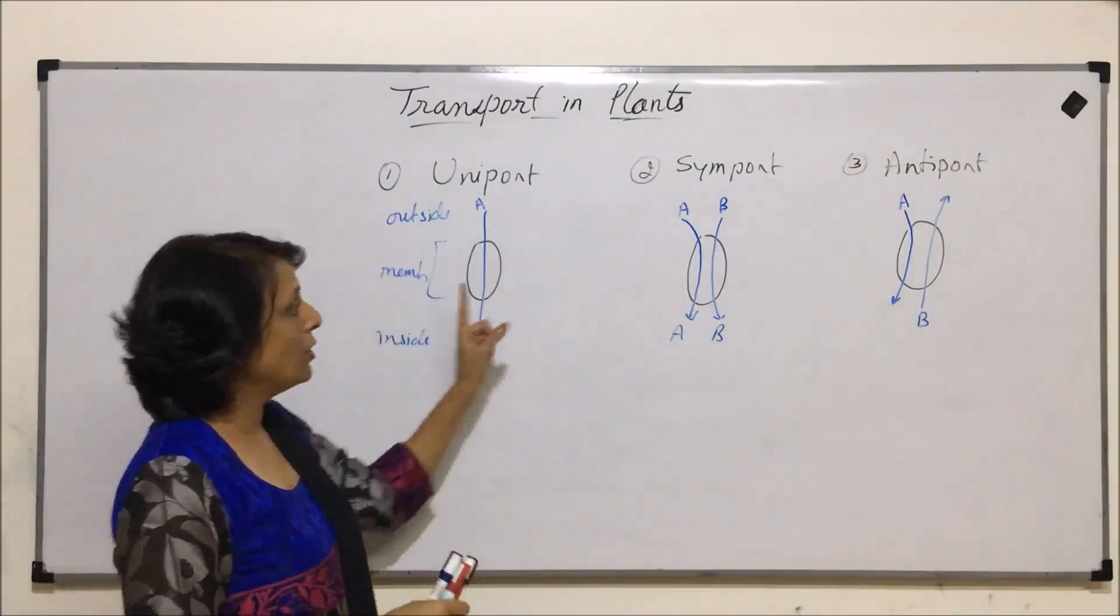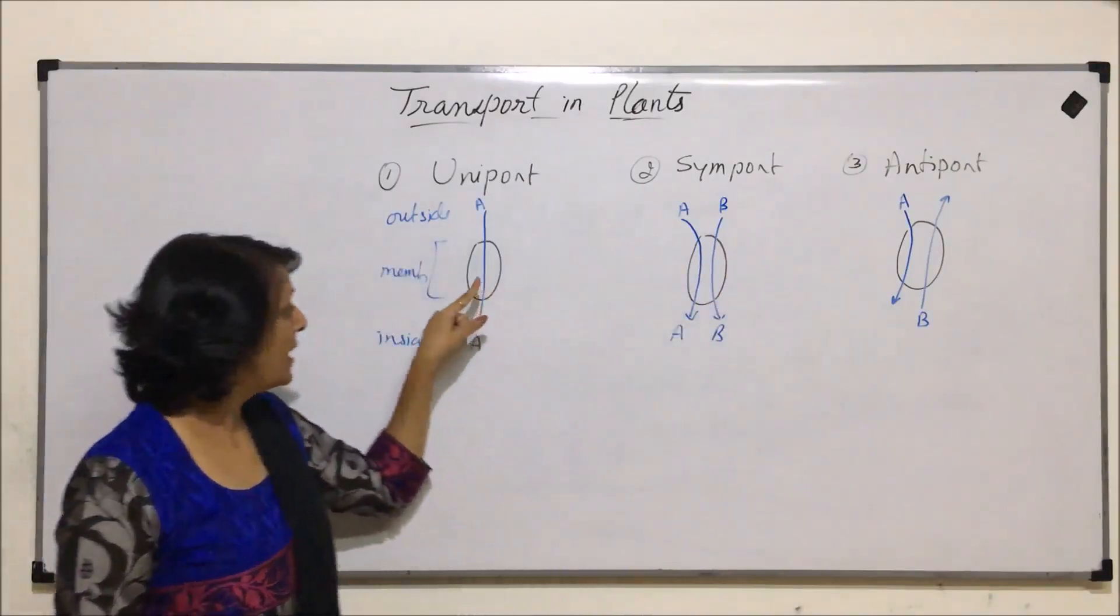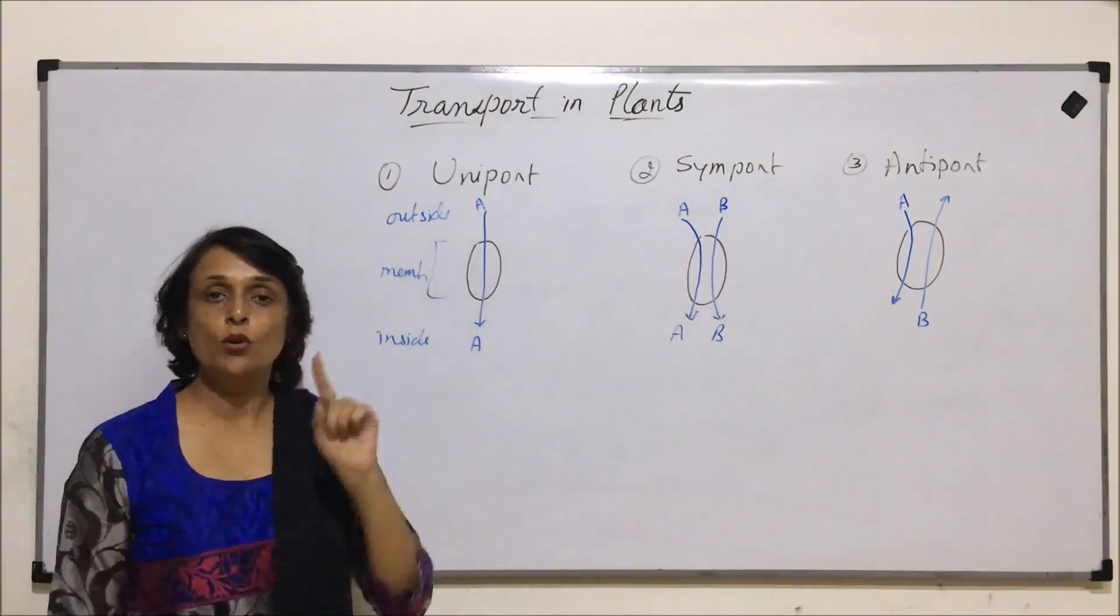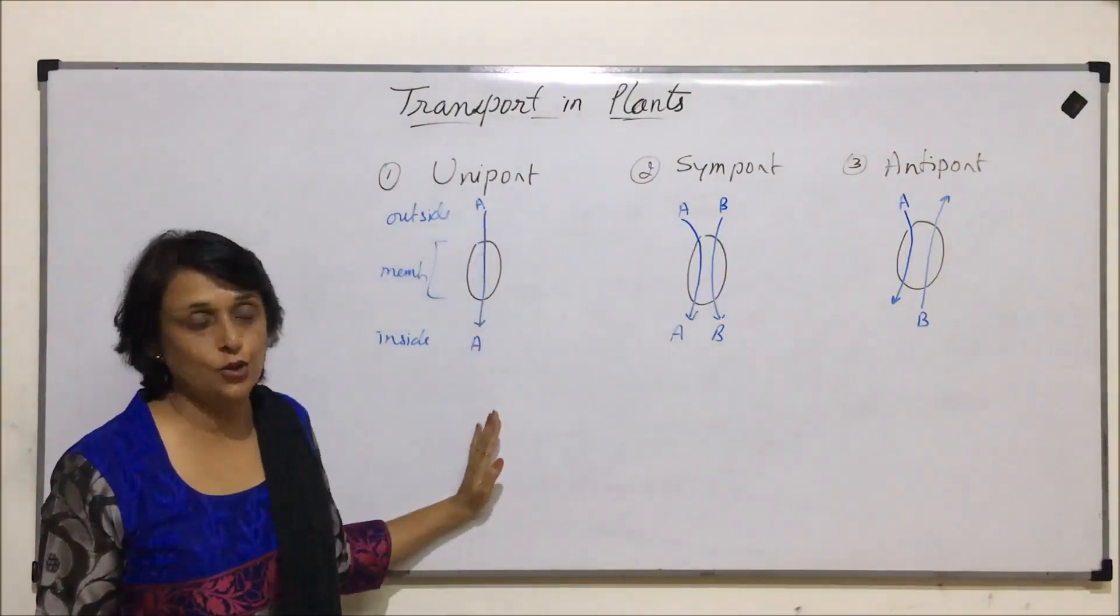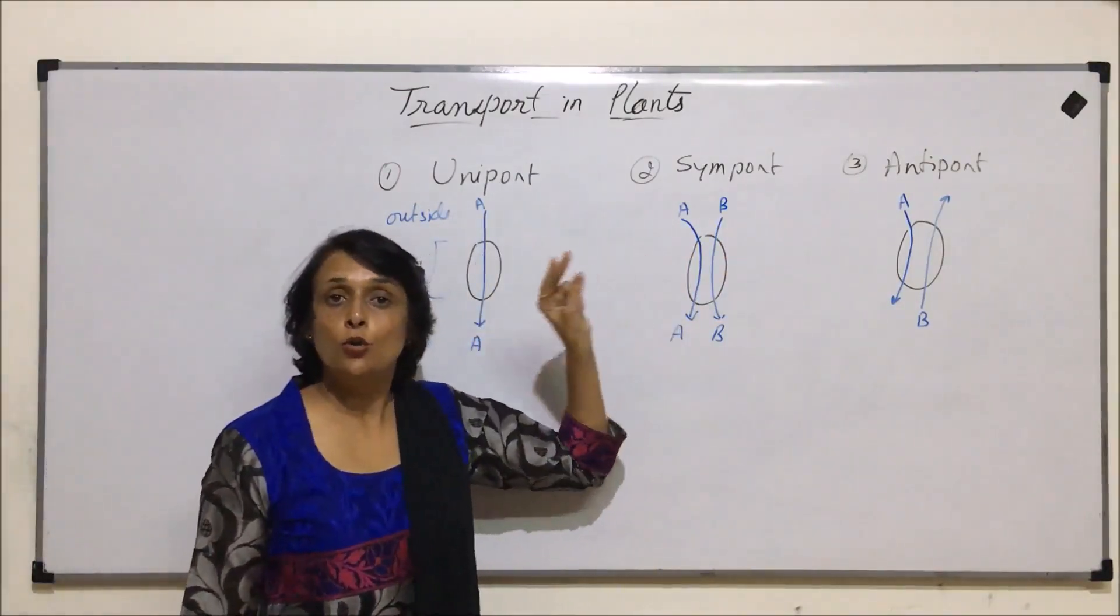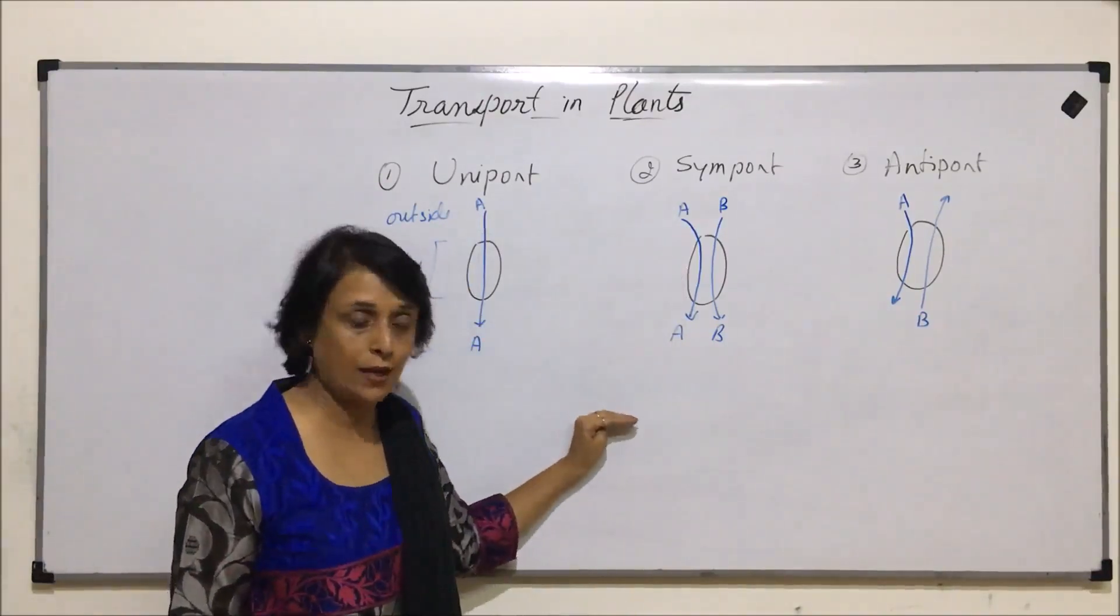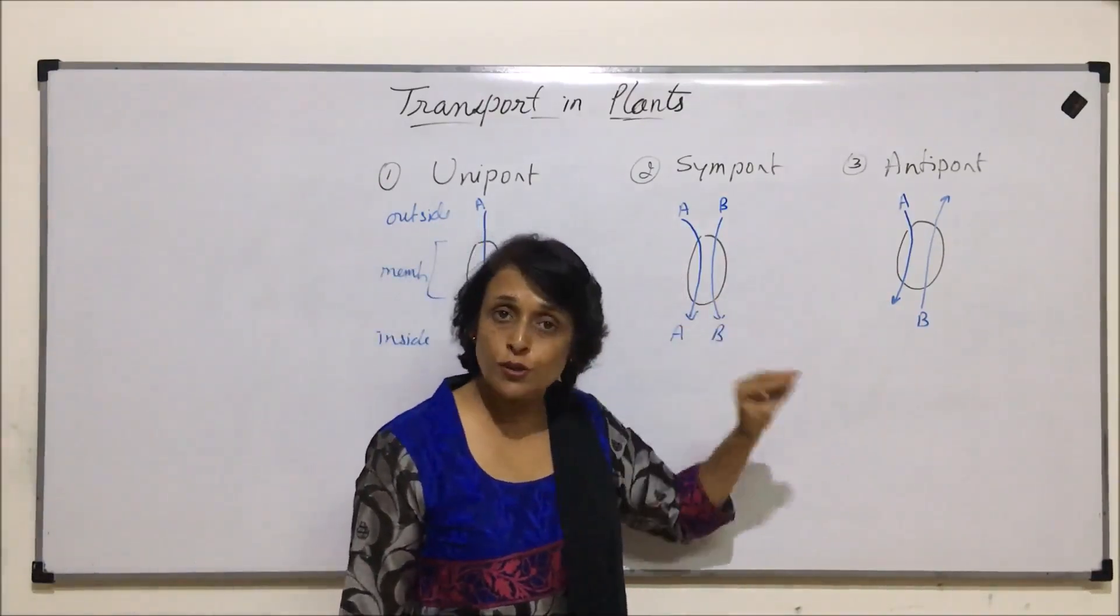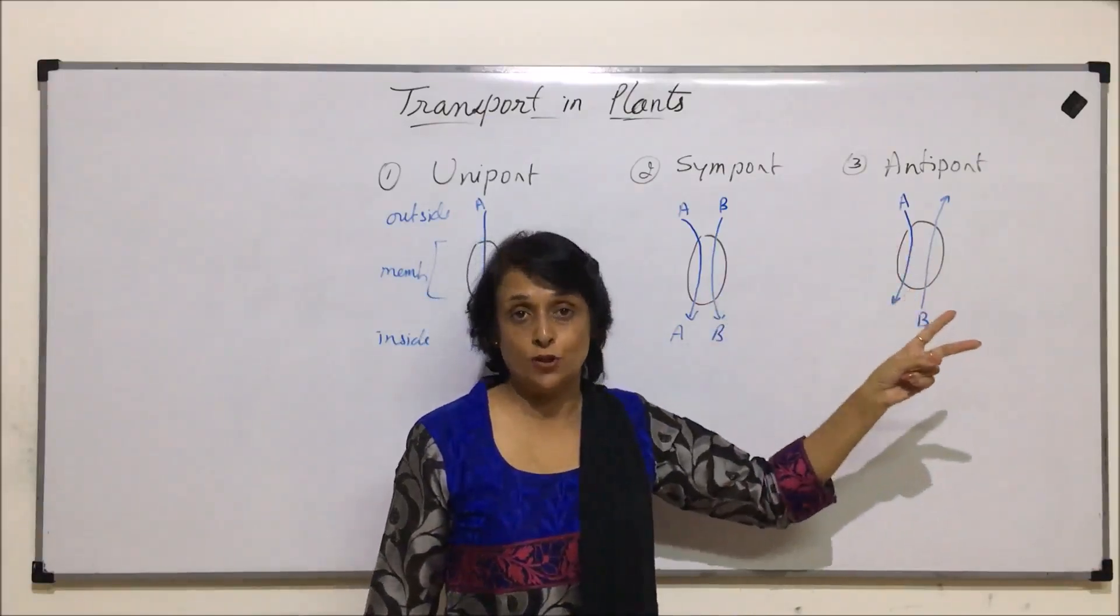So three things. In all three, proteins are helping in transport of substances. In uniport, there is only one substance transported by that protein in one direction. In symport, two substances transported by one protein but in opposite direction.